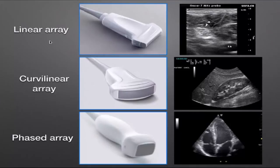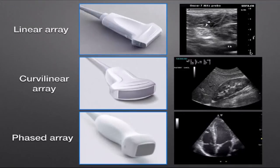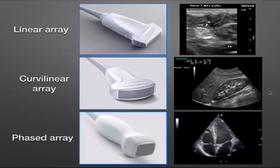The different transducer types include: the linear array, which has a 3–4 cm by 1 cm footplate, sends beams in a straight linear pattern, has a higher frequency, and images to about 4–6 cm depth. The curvilinear array has a larger footplate of about 7 cm by 2 cm, produces a curved sector, and images to 20–25 cm depth because of its lower frequency.